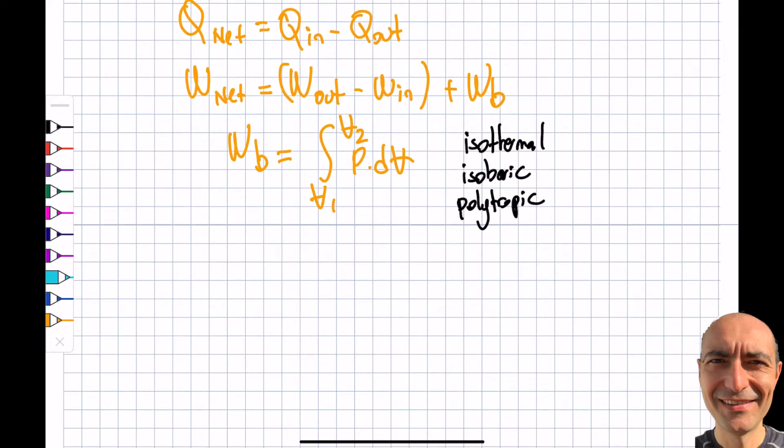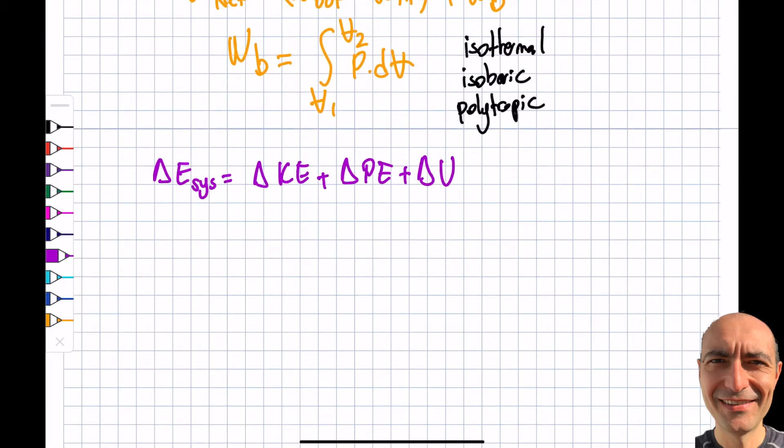Let me look at delta E of the system because I didn't touch upon that yet. This will be delta kinetic energy plus delta potential energy plus delta U, which is the internal energy. If the system is stationary, the velocity will be zero, so delta kinetic energy will be zero. And if it's stationary, the potential energy is not changing. So delta E of the system simply becomes delta U.